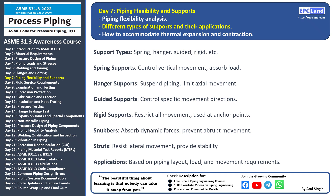Guided supports control movement in specific directions, ensuring the desired piping configuration is maintained. Rigid supports restrict all movement and are typically used at anchor points where no movement is desired. Snubbers absorb dynamic forces such as seismic activity, preventing abrupt and potentially damaging movement. Struts resist lateral movement and provide stability to the piping system, especially where side-to-side motion needs to be controlled.